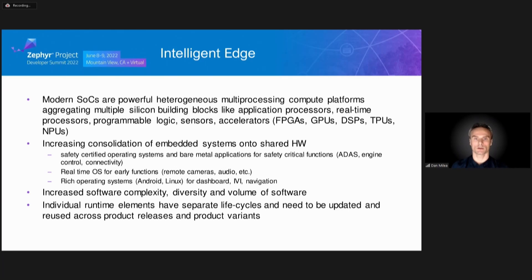The rise of more powerful hardware leads to a comparative increase in the complexity of the software which drives it. We have all witnessed the tendency to consolidate discrete embedded systems onto a reduced number of scalable compute platforms. These multi-core, multi-OS consolidation platforms are driven by a large and diverse amount of software: safety-certified operating systems and bare metal applications for safety-critical functions like ADAS, engine control and connectivity, real-time operating systems for functions like remote cameras and audio, and rich OSes like Android and Linux for dashboards, IVI and navigation.